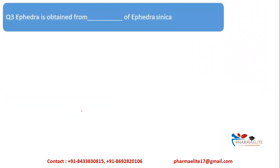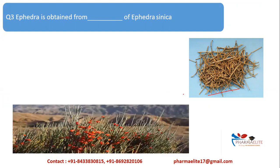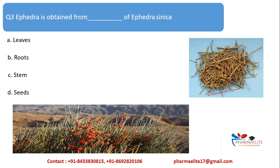Next question: Ephedra is obtained from the dash of Ephedra sinica. This is a picture of Ephedra, which you may have also seen in your pharmacognosy lab work. The question asks what part of the plant is used — whether leaf, root, stem, or seeds. From the picture, you can clearly make out that it is the stem part which is being used.